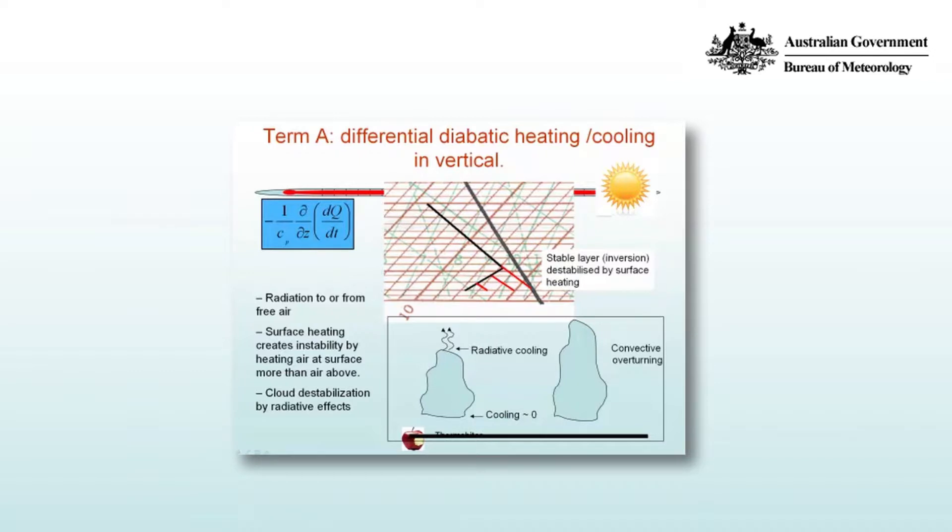Now consider the sun coming up and it heats the surface of the earth. So dq/dt is positive at the surface of the earth. But the free atmosphere is essentially stationary in its temperature in terms of the shortwave heating. So dq/dt is approximately zero.